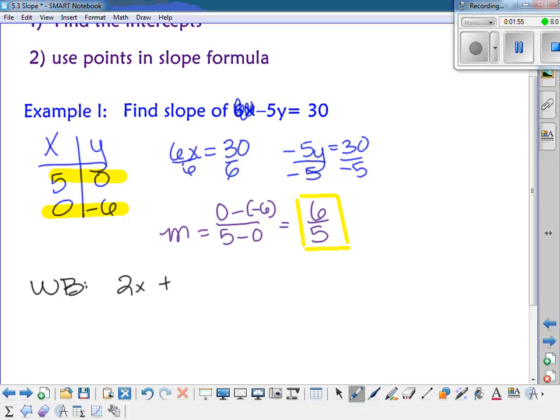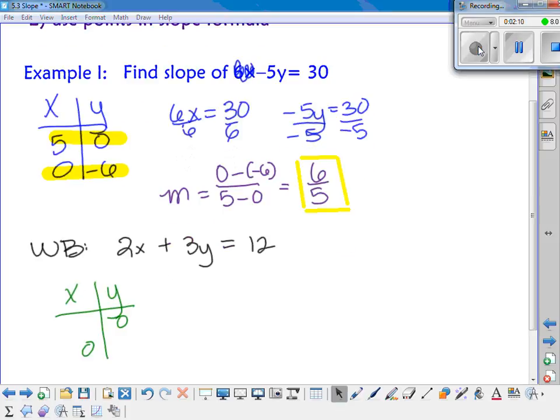we have 2x plus 3y is equal to 12. So first find the intercepts and then find the slope. Okay, so when you put in the 0 for y, what did you get for x?